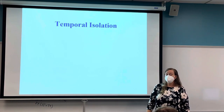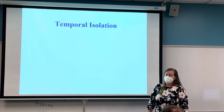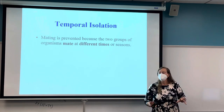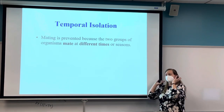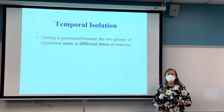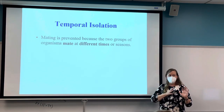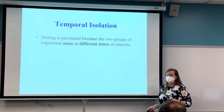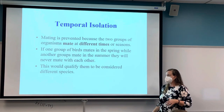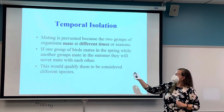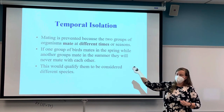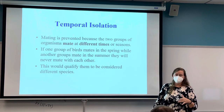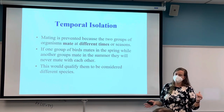Temporal isolation is about time. If one species mates in the spring and another only mates in the fall, they are never going to mate because they never do so at the same time. Temporal isolation can be as simple as night versus day, or it can be different seasons or different months of the year.